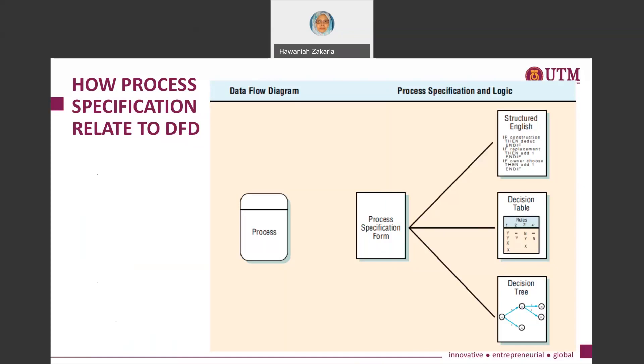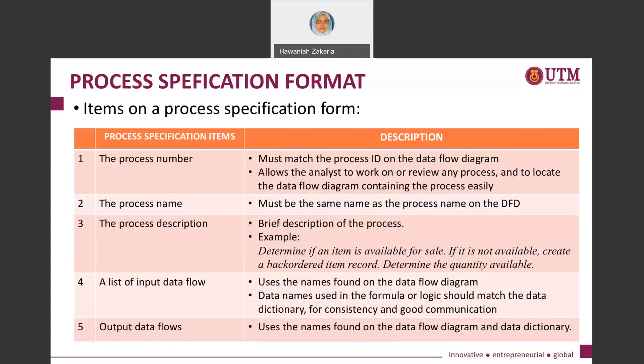If the logic involves multiple conditions, you will likely use decision tables. If conditions require a certain sequence to be followed, then your process specification is best represented using a decision tree. The following videos will discuss each method used in preparing a process specification. When preparing a process specification form, try to make sure all the items mentioned in this slide and the next slide are included.